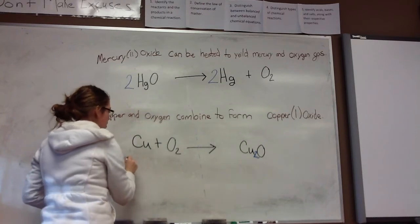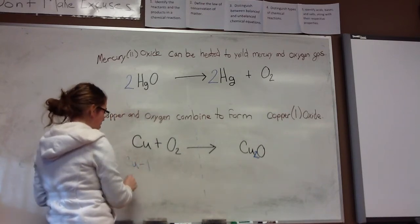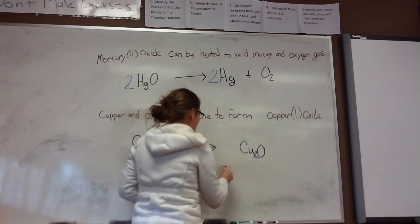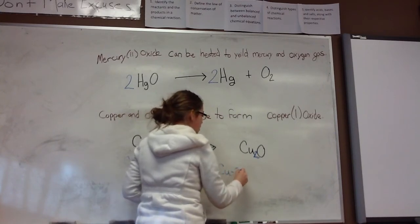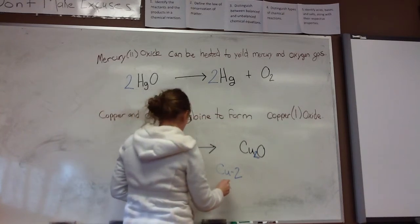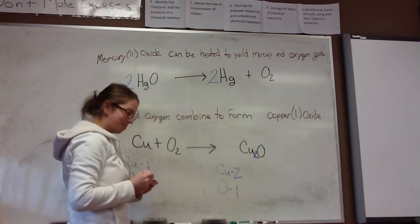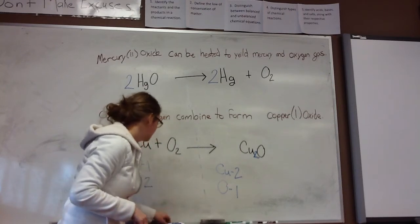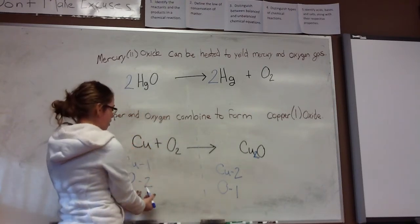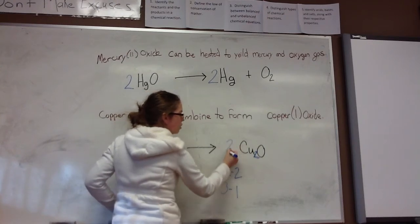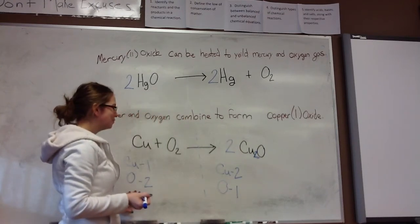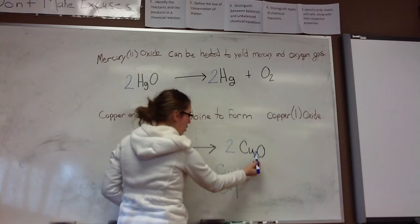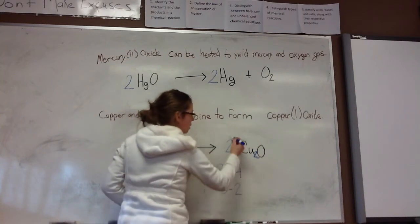Right now, we only have one copper atom on this side of the equation, but we have two oxygen atoms. On this side, we have two copper atoms, but only one oxygen. Balancing our oxygen first, we need to write a coefficient of 2 in front of our copper oxide. That will change this to 4 coppers. 2 times 2 is 4. And now we'll have two oxygens.